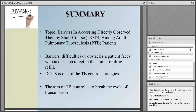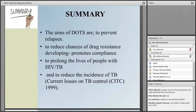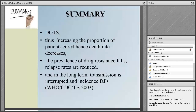Going now to the summary. When I look at barriers, I look at what difficulties or obstacles the patients are facing to actually get drug refill. DOTS is one of the TB control strategies and its aim is to control or break the cycle of transmission in TB. The aims of Direct Observed Therapy Short Course are to prevent relapses, reduce the chance of drug resistance developing because it promotes compliance, prolong the lives of people with HIV and TB, and reduce the incidence of TB, thus increasing the proportion of patients cured.